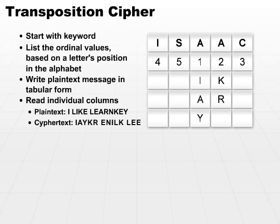Column 3, the same thing — I would list the next characters, E and N. Then I do the last two columns: I-L-K and L-E-E. And I just pull it up from my ciphertext.